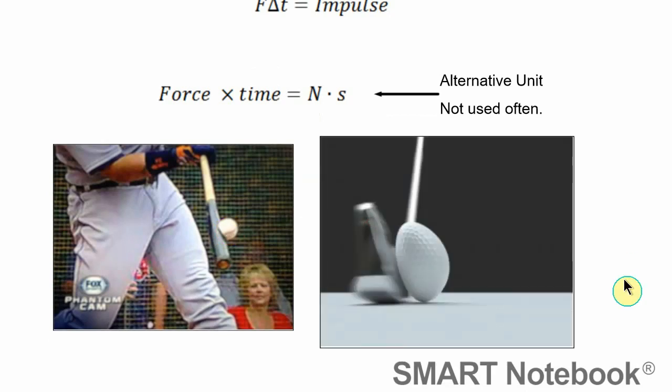Here we have the same thing except in golf ball form. When the club strikes the golf ball, you have a major deformation of the golf ball. You don't usually see that in normal life because this happens in such a small amount of time.